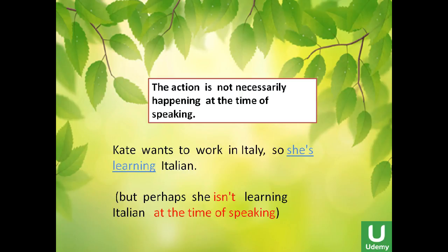When you say he's having a shower, it means he is actually in the bathroom having a shower right now. We also use the present continuous for actions not necessarily happening at the exact time of speaking. For example: 'Kate wants to work in Italy, so she's learning Italian' — she is learning Italian, but perhaps she's not learning Italian at the very moment of speaking.